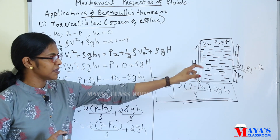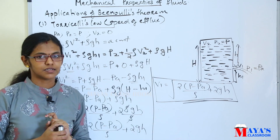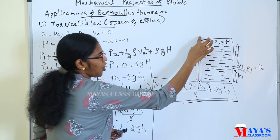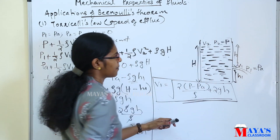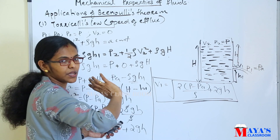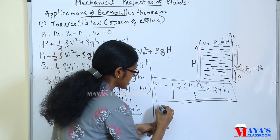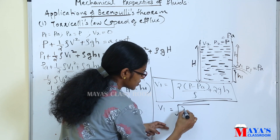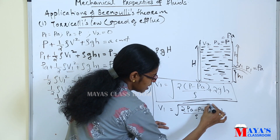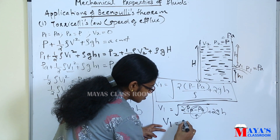If the tank is open to the atmosphere, then P is atmospheric pressure Pa. Substituting P equal to Pa, the term (P − Pa)/rho becomes zero. So V1 is equal to the square root of 2gh, where the (P−Pa) term cancels out.